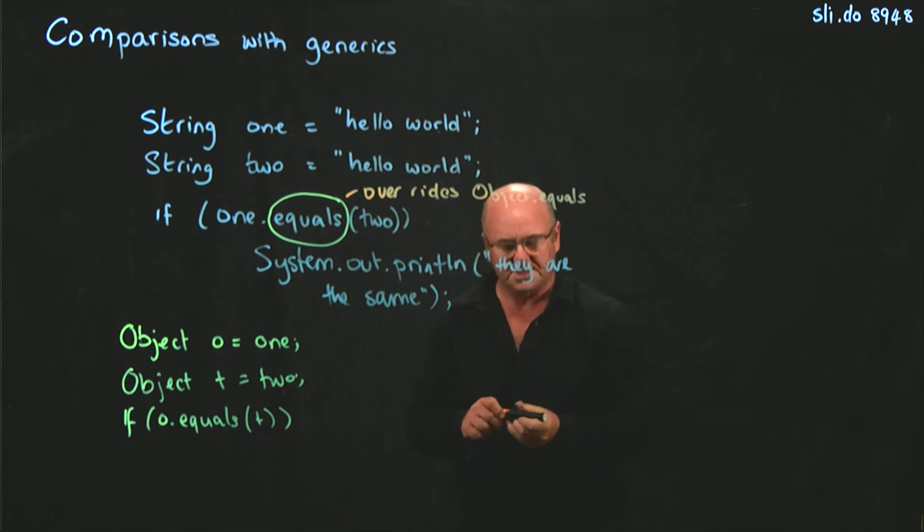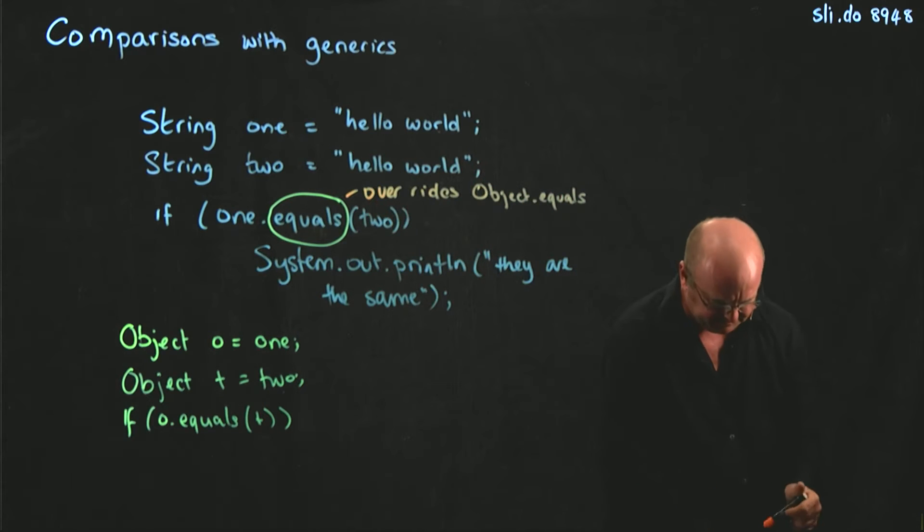It's in the string class. It overrides the object dot equals. But it is not the object equals. It overrides it. Absolutely.